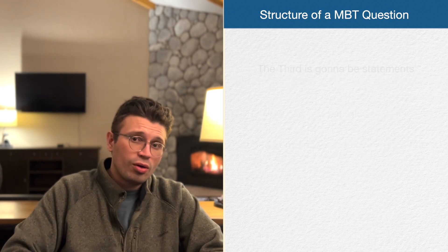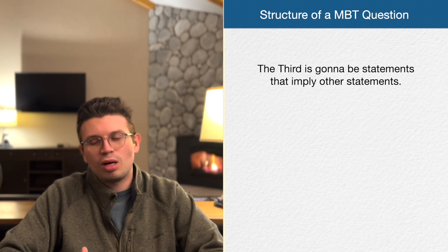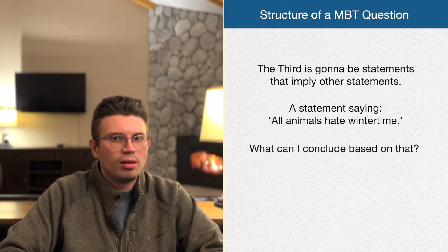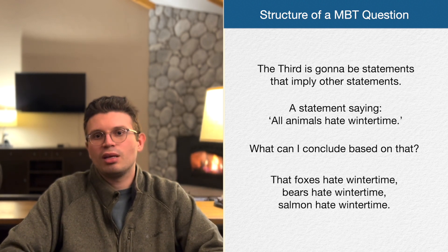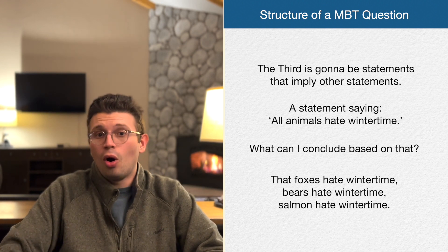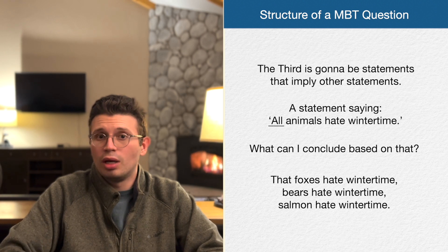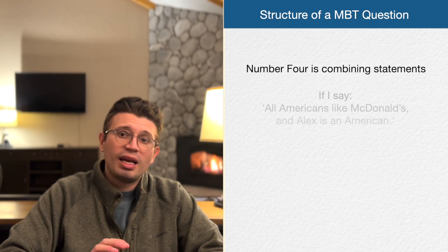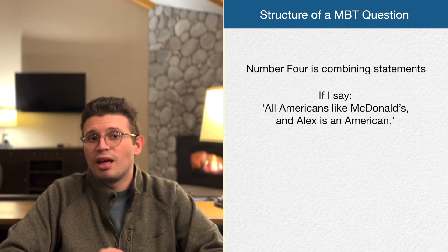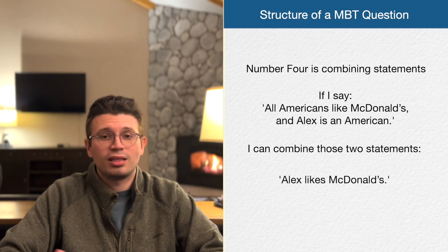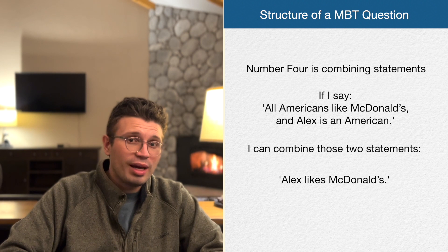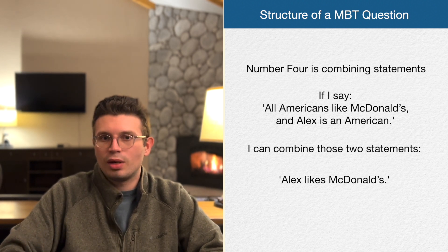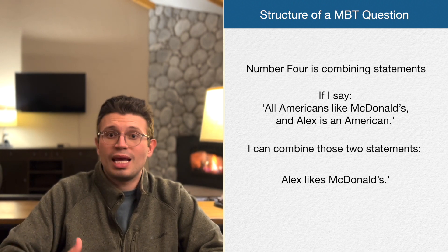The third way is statements that imply other statements. If I have a statement that says 'all animals hate wintertime,' I can conclude that foxes hate wintertime, bears hate wintertime, salmon hate wintertime — all of those have to be true because I said 'all,' not 'some,' 'many,' or 'most.' Number four is combining statements: if I say 'all Americans like McDonald's' and 'Alex is an American,' I can combine those and say 'Alex likes McDonald's.' Everything here is a valid way of approaching must be true questions.